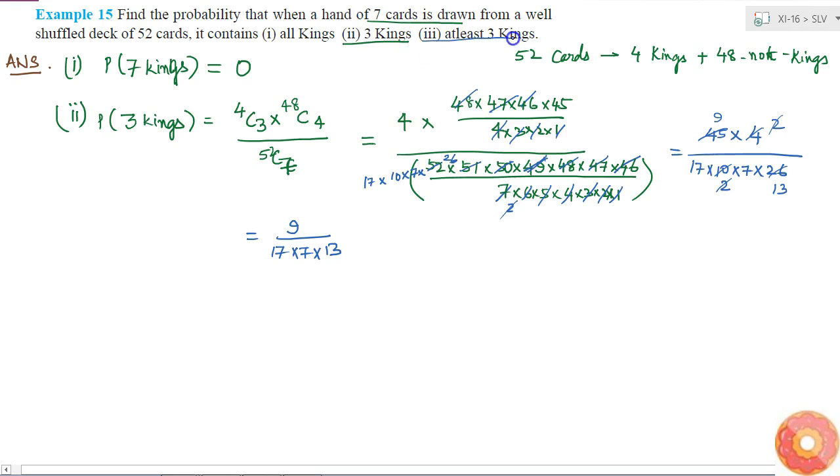And what is the last part? Probability of getting at least 3 kings. So that will be equal to probability of greater than or equal to 3 kings, which is equal to probability of getting 3 kings plus probability of getting 4 kings.